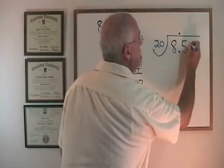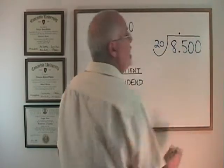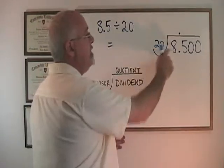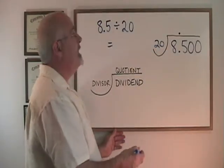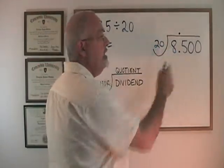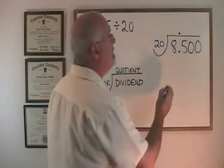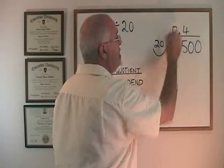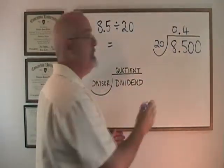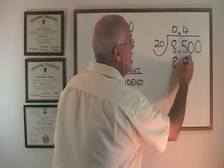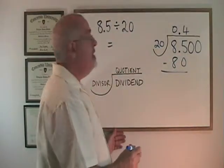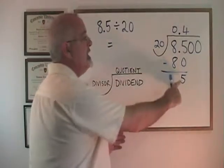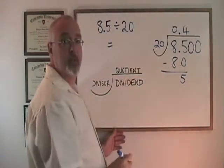I also put as many zeros as I want after. And I ask myself: does 20 fit into 8? No. Does 20 fit into 85? Yes — four times with some left over. I write the 4 here. I have to write a 0 here. And 4 times 20 is 80. I write 80 and I subtract. 85 minus 80 is 5.